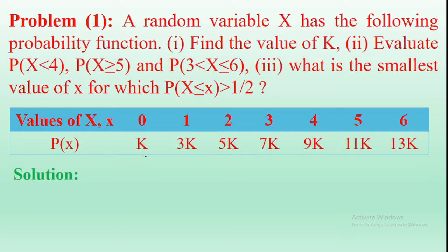The third part asks: what is the smallest value of X for which P(X ≤ x) is greater than 1/2? Let's start with the first part — finding the value of K.